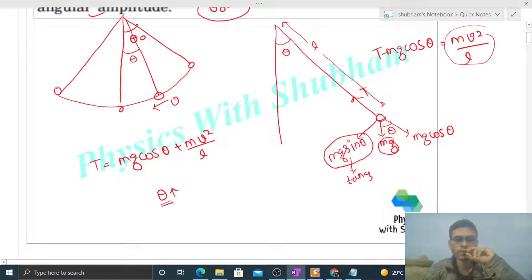That is mg cos theta plus m into v square divided by L. Now if I increase the value of theta, you can see that cos theta decreases. mg is constant. If theta increases, cos theta decreases. Similarly, m by L is constant. The speed will also decrease.